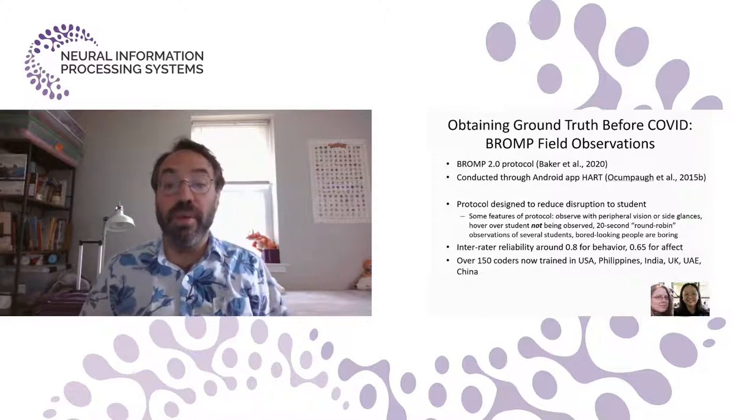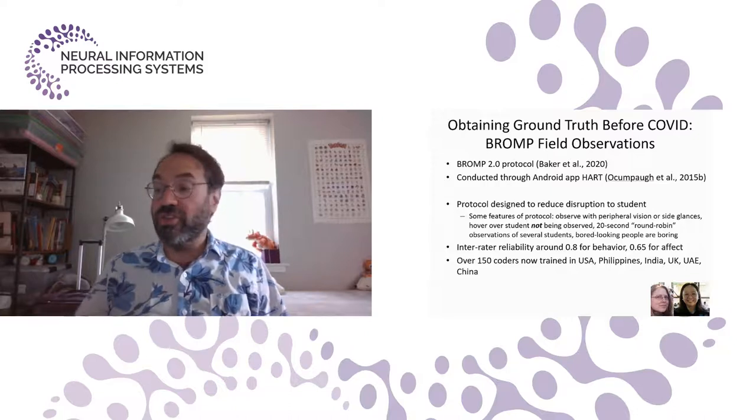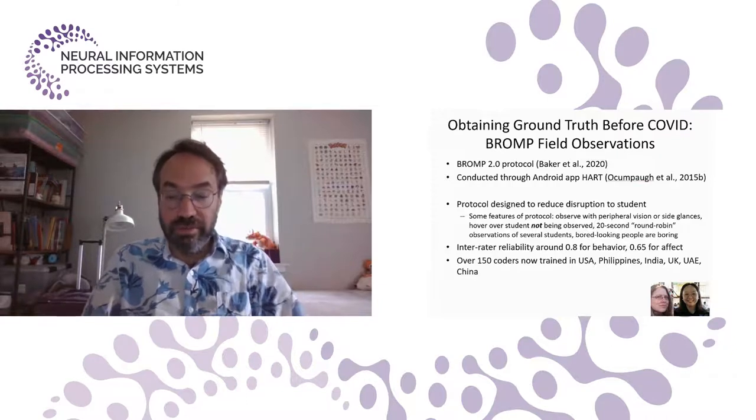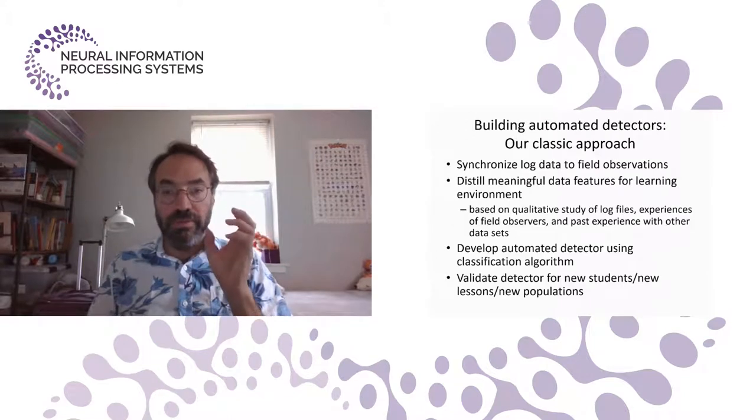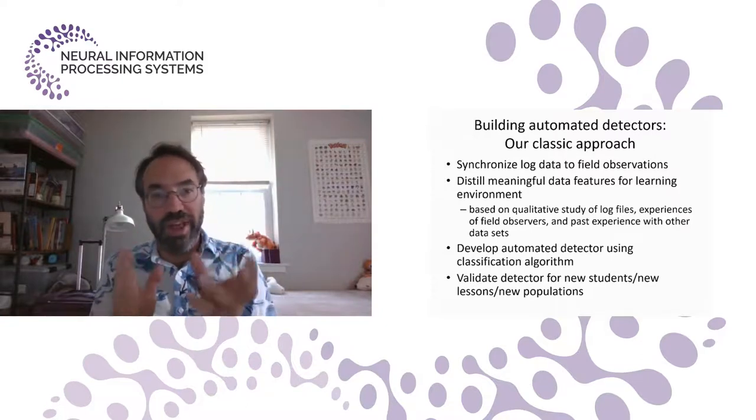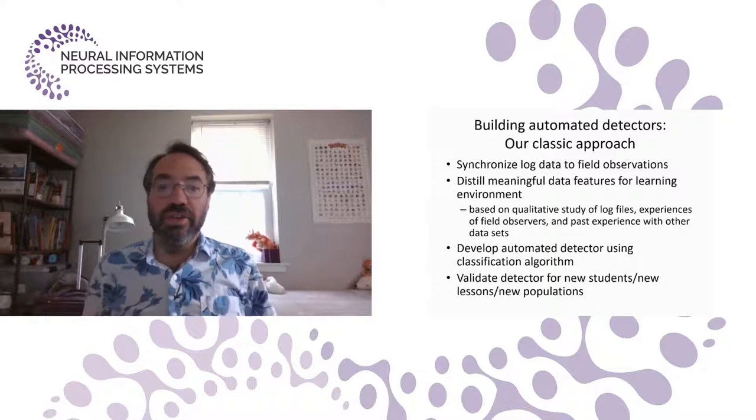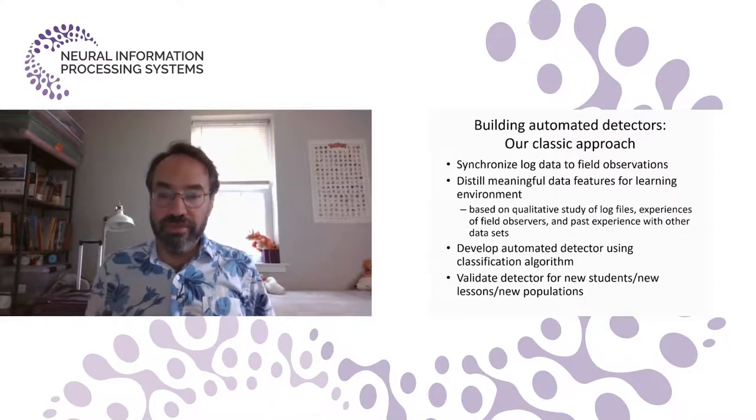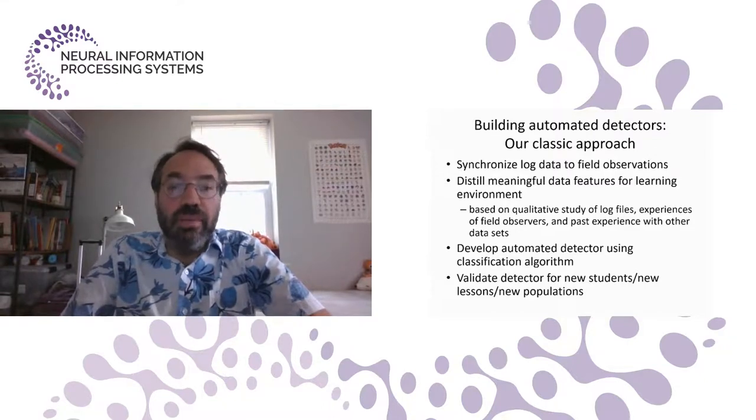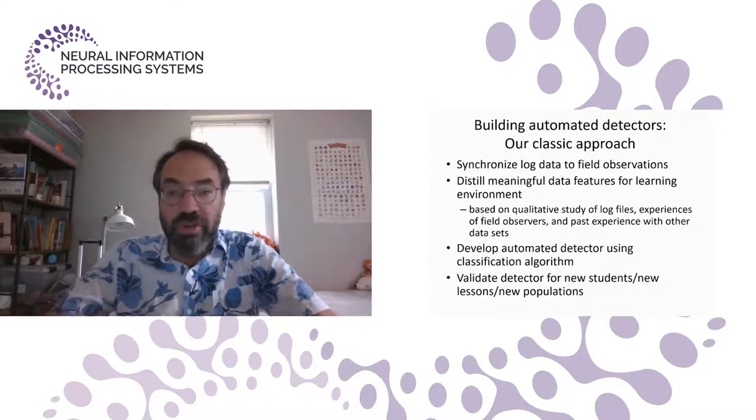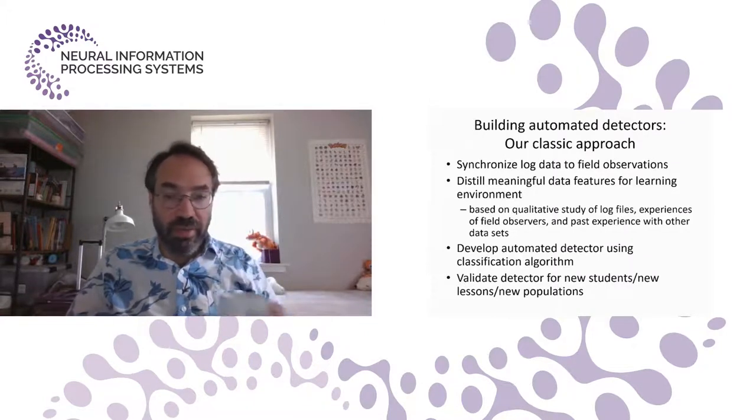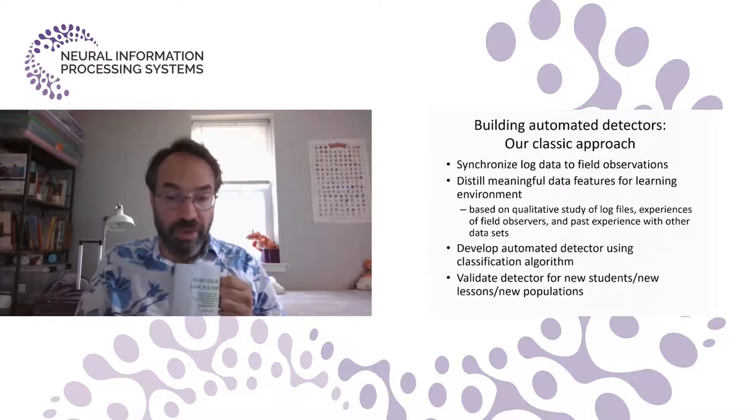Over 150 coders have now been trained in six countries for BROMP. And they've achieved, each of them, inter-rater reliability around 0.8 for behavior and around 0.65 for affect. So our first approach to building automated detectors, I call it classic because we use classic algorithms, is first we synchronize log data field observations. We then distill meaningful data features for the learning environment. We do this feature engineering process based on a qualitative study of the log files, the experience of our field observers, and past experience of other datasets. We then develop an automated detector using a classification algorithm, and we validate the detector for new students, new content, and new populations of learners.